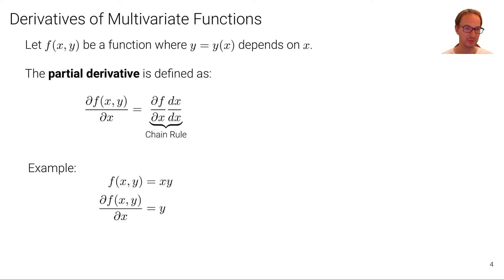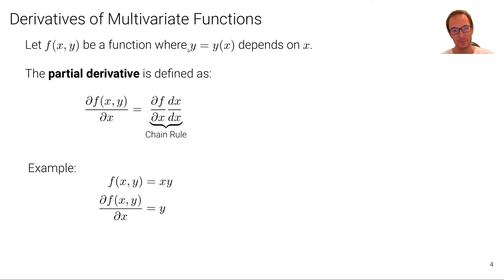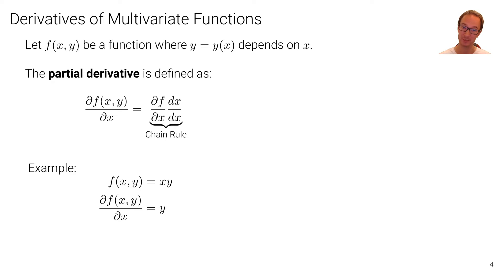Now let's move to derivatives of multivariate functions. So far we've only considered functions of a single argument x, but now let's consider multivariate functions — functions that depend on multiple arguments, or an argument of higher dimensionality. Let's consider the simplest case: a function f(x, y) where the variable y also depends on x — y is itself a function that depends on x. We introduce this situation with the purpose of distinguishing the terms partial derivative and total derivative.